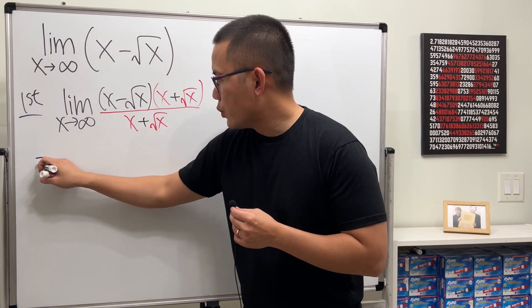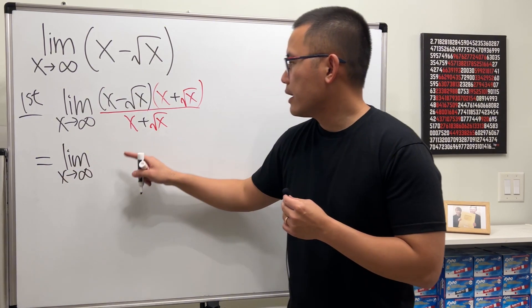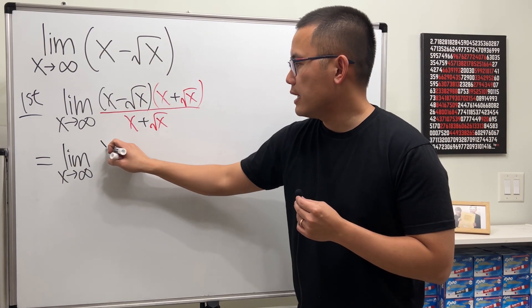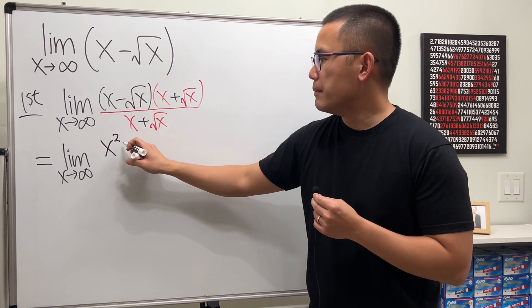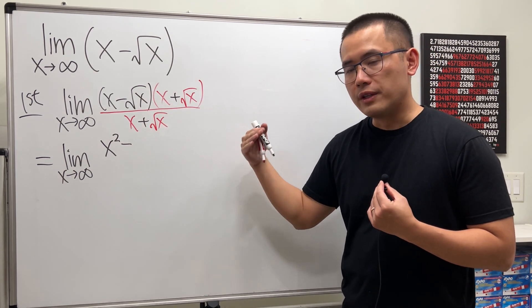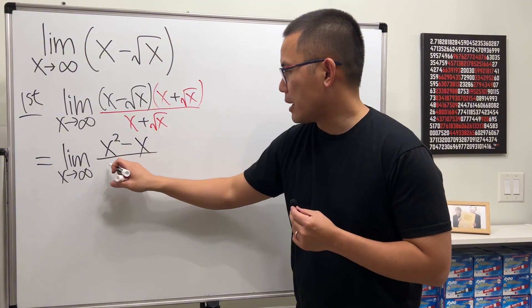Then we will end up with the limit as x approaching infinity. Now if we work that out on the top we just need to square the first term which is x squared and then minus square the second term. Square root squared is just x, and then over this on the bottom.